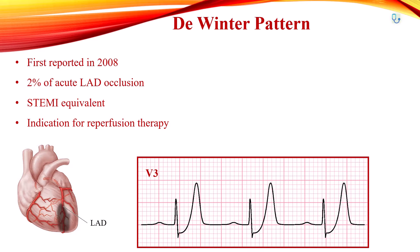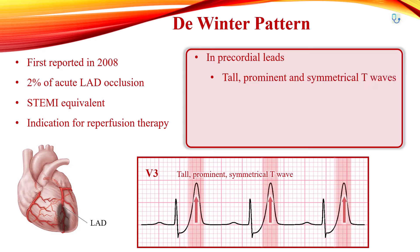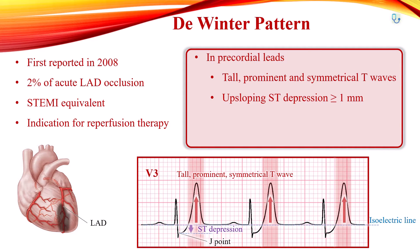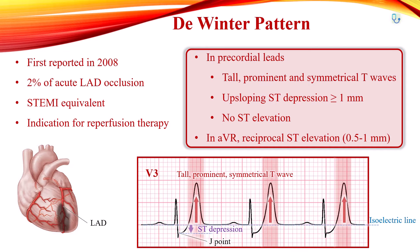The EKG diagnostic criteria are as follows. Tall, prominent, and symmetrical T waves can be observed in precordial leads. There is also upsloping ST segment depression more than 1 mm at the J point. No ST segment elevation can be observed in precordial leads. AVR shows reciprocal ST segment elevation, 0.5 to 1 mm.